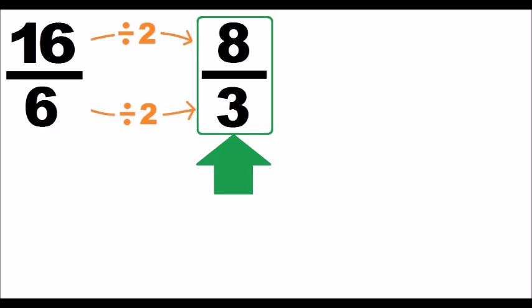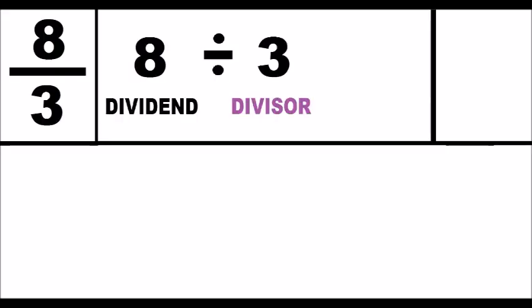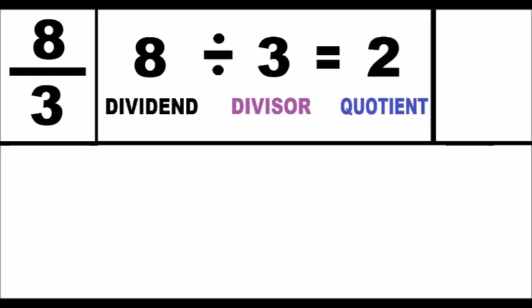Second step: the denominator 8 divided by the numerator 3 — I get the quotient 2, and the remainder of the division is 2.